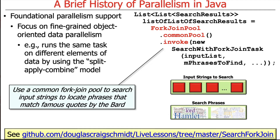There's an example called the search fork join example, which uses the common fork join pool to search the works of Shakespeare to find quotes. Shakespeare used a lot of what we'd now call clichés — though of course he came up with the quotes that people turned into clichés. This program searches his works and demonstrates the performance speedup of embarrassingly parallel techniques for text processing.